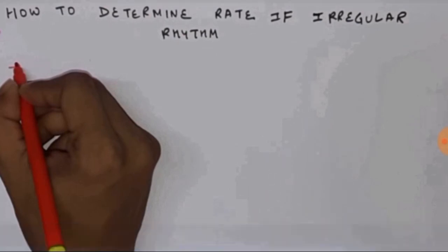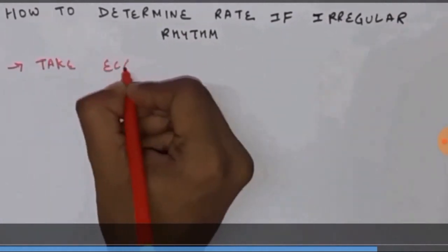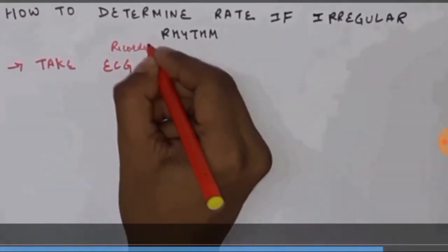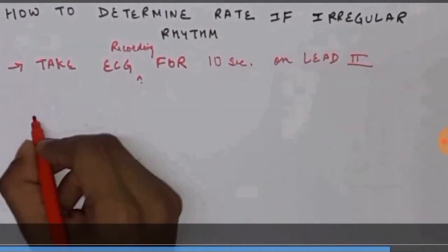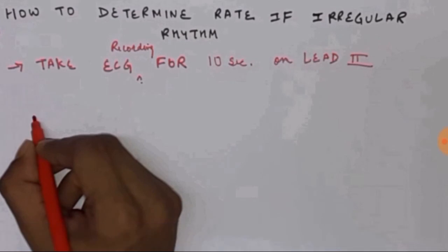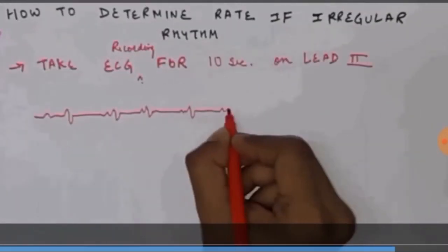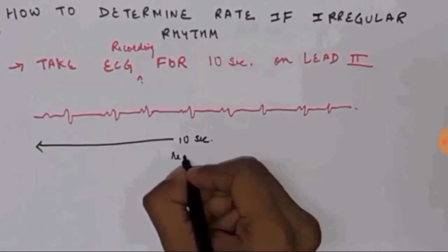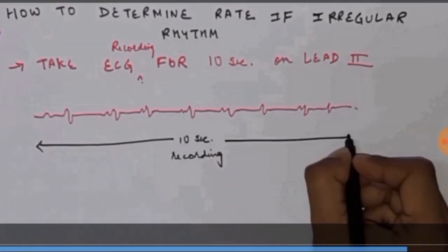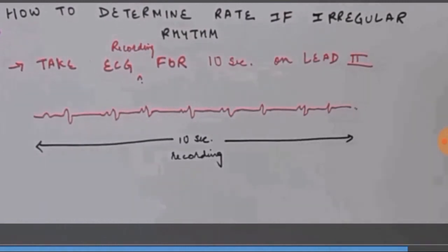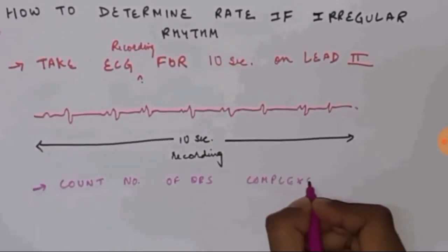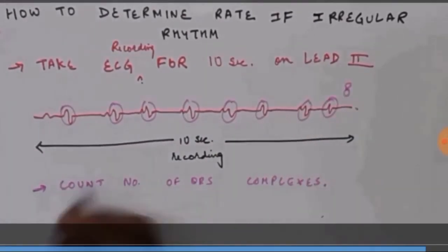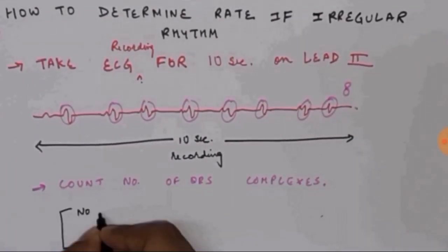How to determine the rate if it is irregular rhythm? Let's going to see. Take the ECG recording for 10 seconds on lead 2. What does that mean? We are going to turn on the ECG machine, and we are going to wait for 10 seconds, so that it makes a recording like this. This is a 10 second recording, and we are going to calculate how many number of QRS complexes are there in a 10 second recording. Here, it is 8. So 8 is the number of QRS complexes for a 10 second recording.